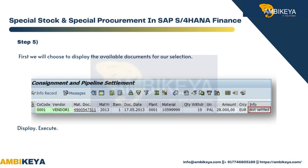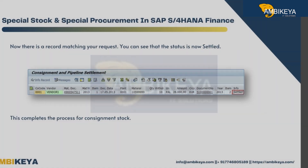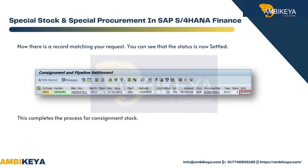Step 5: First we will choose to display the available documents for our selection. Execute — you can now see the message that document 5100000001 was created for settled withdrawals. Now there is a record matching your request, and you can see that the status is now settled. This completes the process for consignment stock.